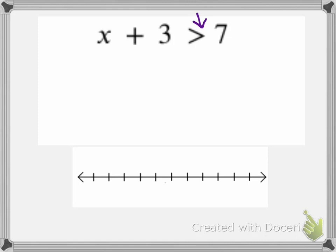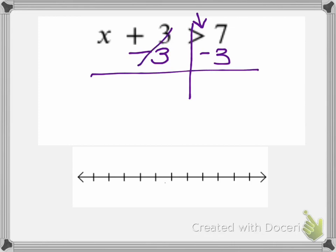So since this problem says x add 3, we're going to do the inverse operation of that. We're still going to draw our line through the inequality sign. We're going to do the inverse operation of add, which is subtract. The positive 3 and the negative 3 eliminate, so that gives me x, and 7 subtract 3 is 4. I'm going to keep my inequality sign, which is greater than.